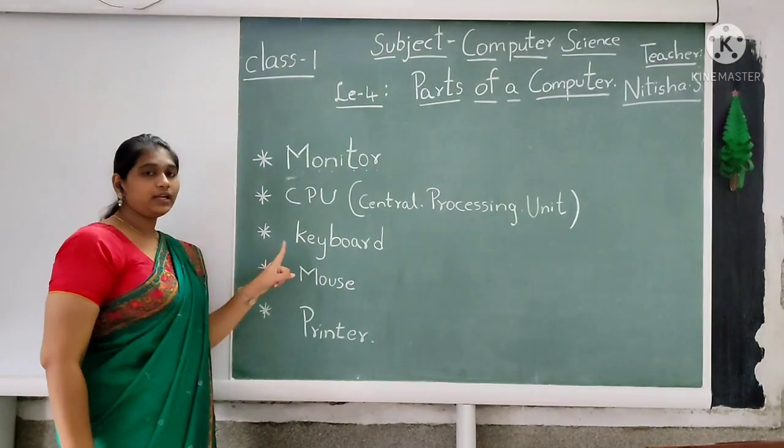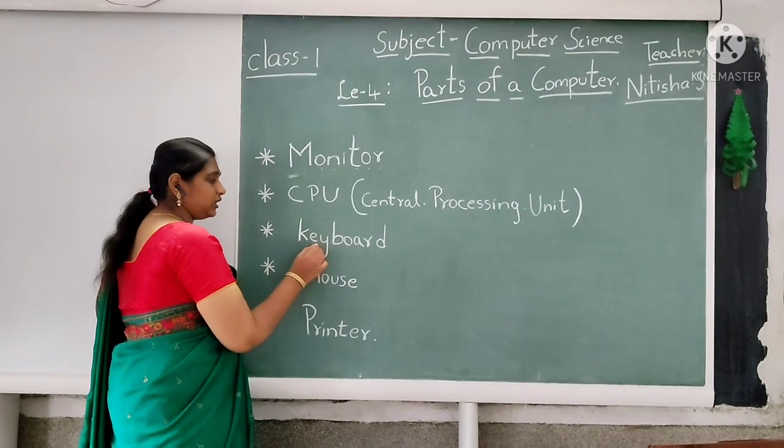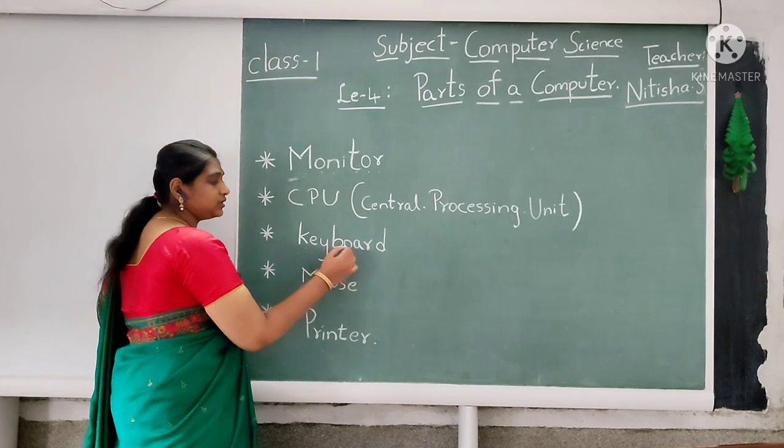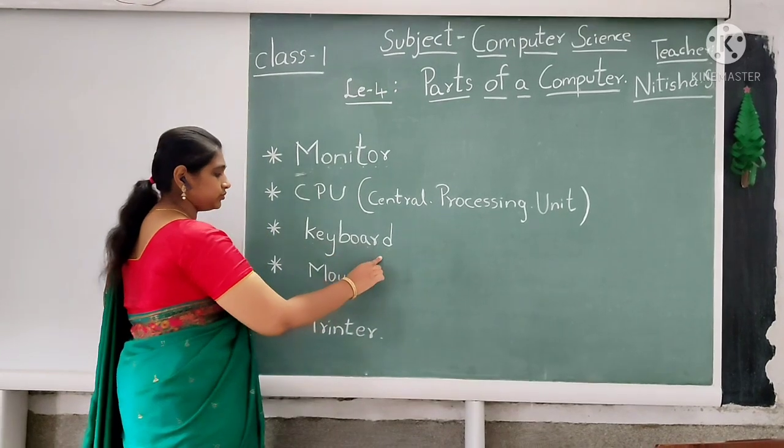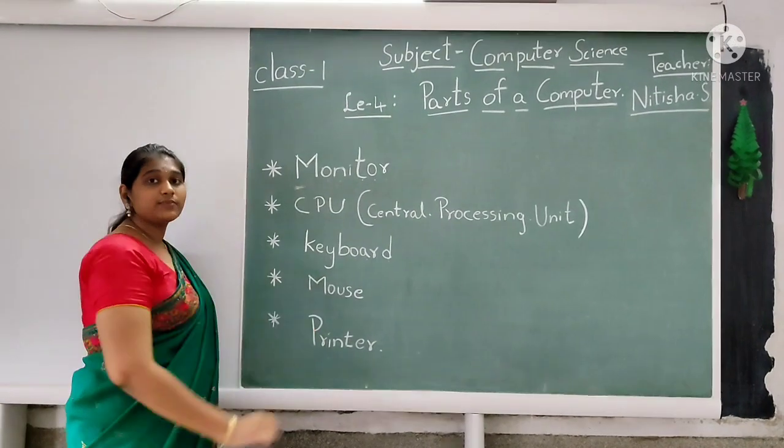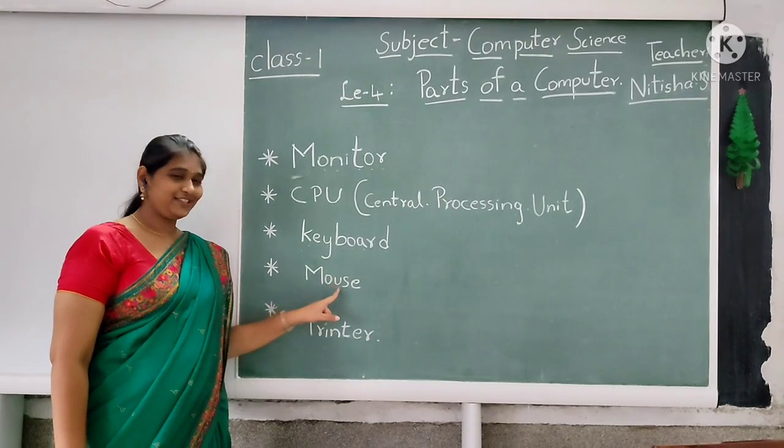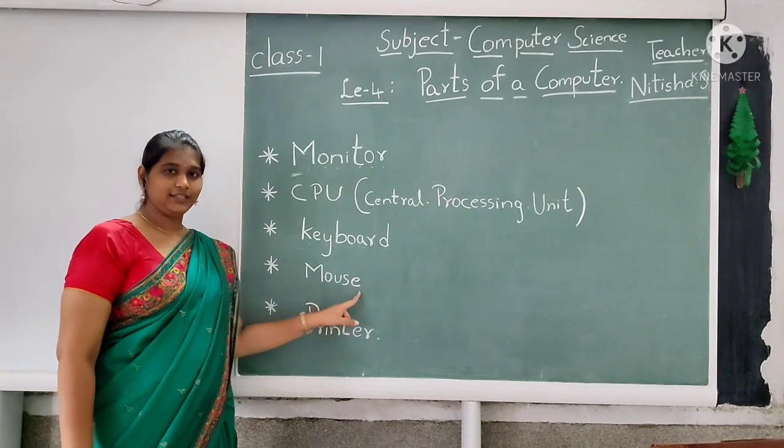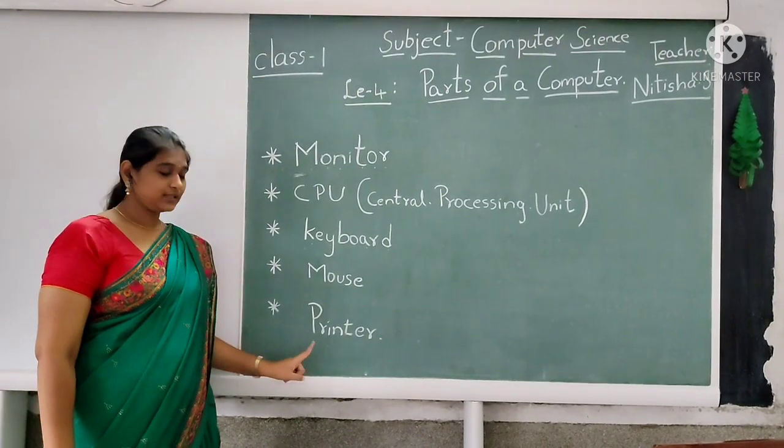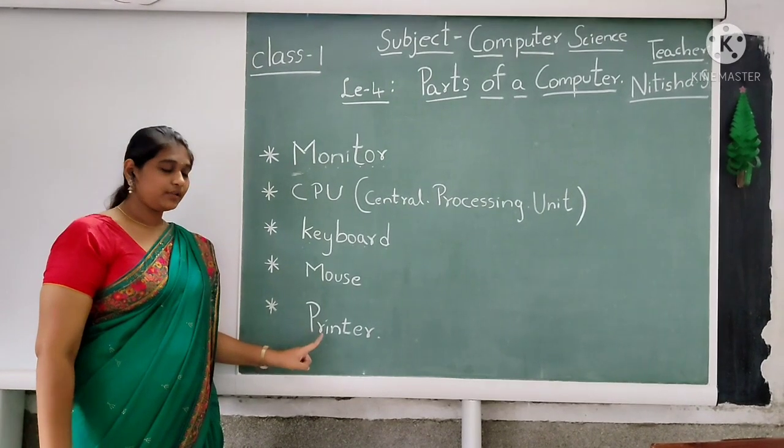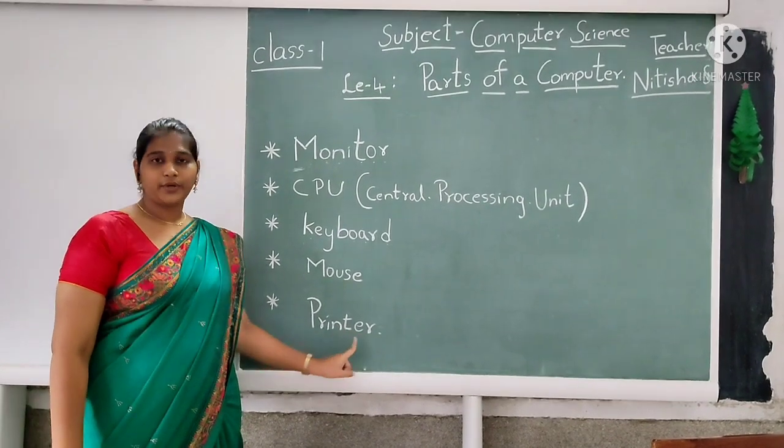And then a keyboard. What is the spelling of a keyboard children? K-E-Y-B-O-A-R-D. Keyboard. Next, a mouse. What is the spelling of the mouse children? M-O-U-S-E. Mouse. And then, the printer. The spelling of the printer is P-R-I-N-T-E-R. Printer.